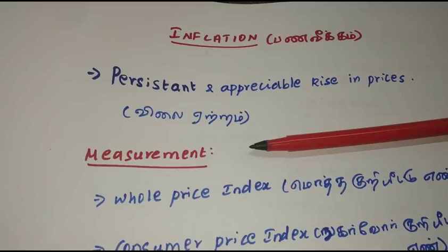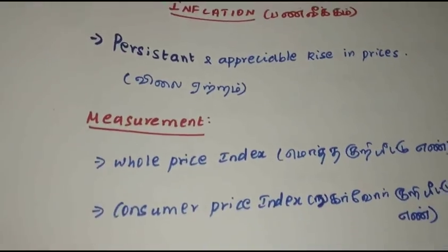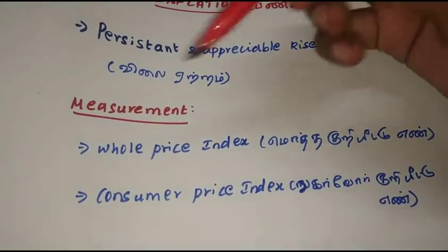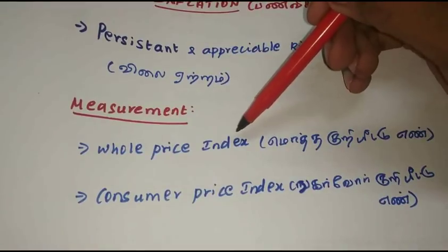If you want to do a minimum of inflation, you'll see a lot of inflation. Next, the measurement. How do you measure it? Let's say the Wholesale Price Index — WPI.